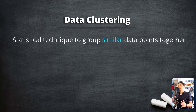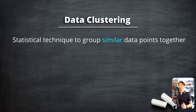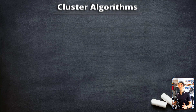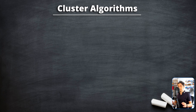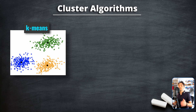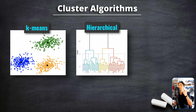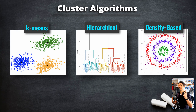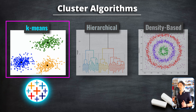A cluster group is another way of grouping your data, used for data clustering, which is a statistical technique to group similar data points together. In data clustering we have different algorithms to calculate the clusters — for example, k-means, hierarchical clustering, and density-based clustering. Tableau chose to go with the k-means algorithm since it's simple, easy to implement, and widely used.